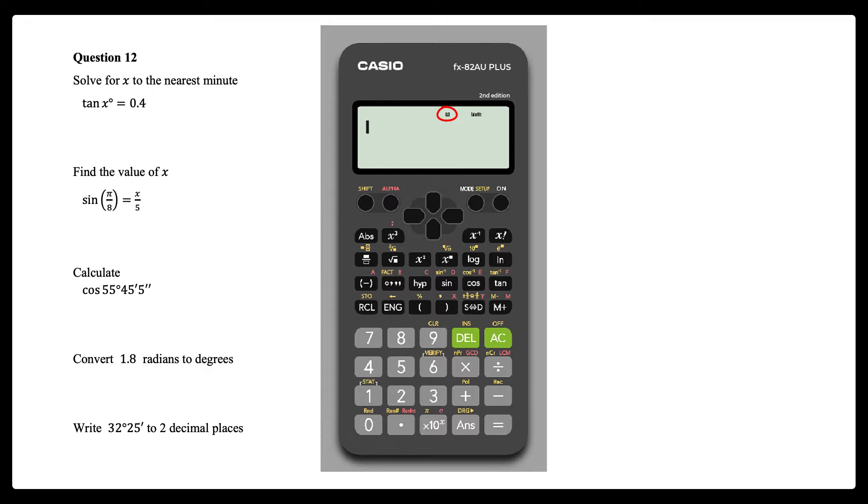My calculator displays an r, indicating that it is currently set to radians. To change the global setting for angle measure, press shift then mode, then make your choice. I'm going to press 3 to choose degrees.